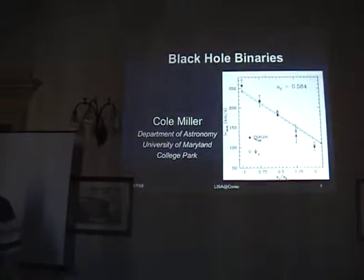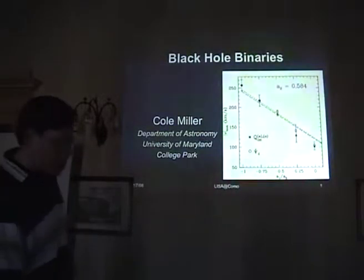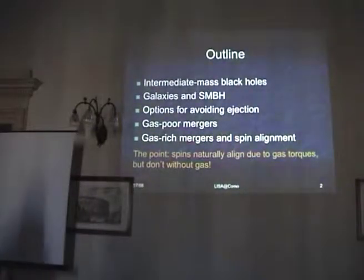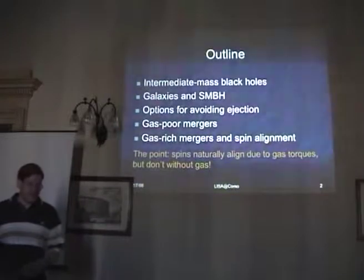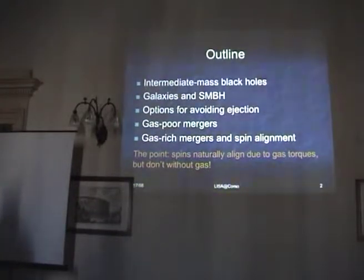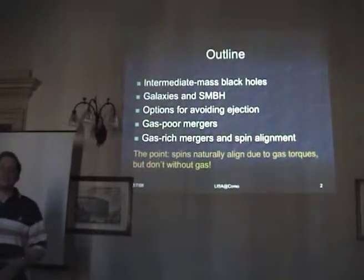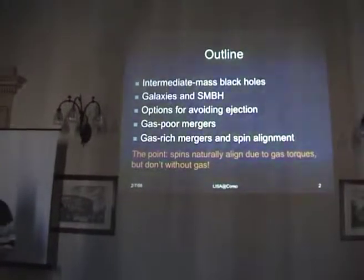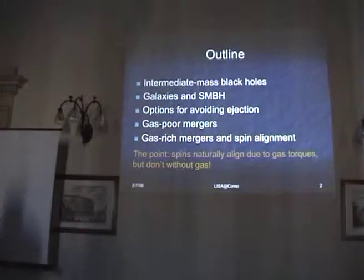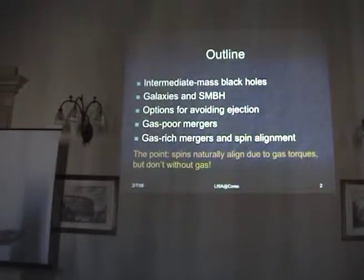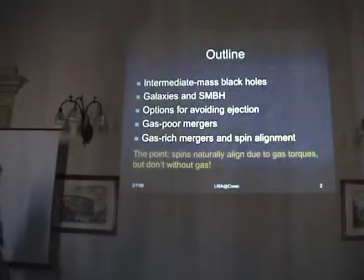I was originally asked to give a general overview of black hole binaries. However, since we've heard several talks about different aspects of them, I think I will restrict my attempts to slightly more specific issues. In particular, I'm going to give a brief introduction to intermediate mass black holes, but then spend the majority of my time talking about supermassive black holes and the issue that Tamara Bogdanovich, Chris Wallace, and I proposed: that in gas-rich mergers, you can have a natural alignment of the spins — spins in the same direction as each other and as the orbital angular momentum, which helps a lot. So spins do naturally align due to gas torques, but not without.